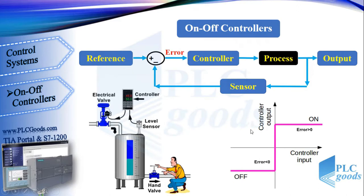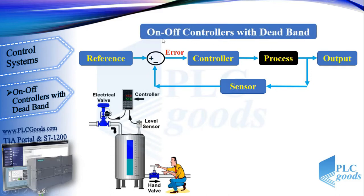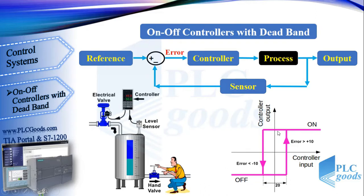This diagram shows the operation of the on-off controller. This controller opens the filling valve when the error is positive, otherwise its output is off. The main problem is when the error is close to zero, because in the presence of disturbances such as fluctuations in the liquid, the controller output switches between on and off continuously. To solve this problem, we can use on-off controllers with a dead band. The controller output is off until the error reaches 10 centimeters. After that, small disturbances cannot turn off the output immediately, because the output stays on until the error reaches minus 10 centimeters. So with this, small disturbances cannot change the output states. Based on the process and disturbances, we can change this width.